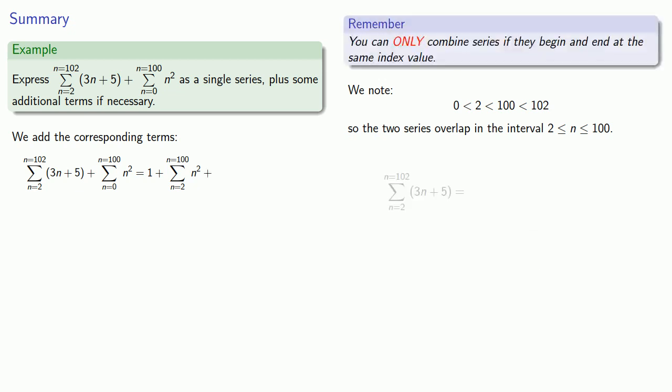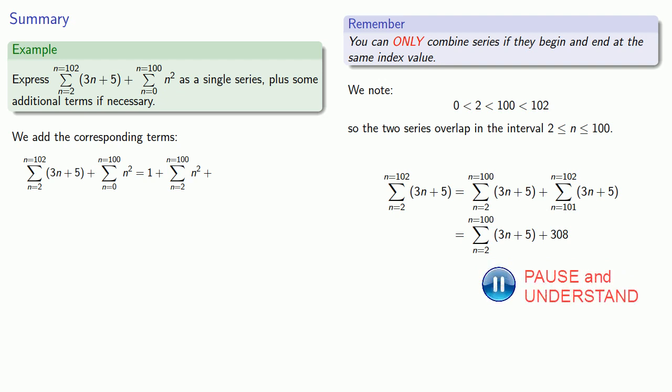We can replace this series from 0 to 100 of n squared with 1 plus the sum from 2 to 100 of n squared. Now let's take a look at the second series. We'll split off the part that runs from 2 to 100, and then we'll have some leftover terms. We can keep the first part as that's part of the overlap, and the second part we will evaluate. If n equals 101, the term is 308. And if n equals 102, the term is 311. So we can add these two terms together, and we have an expression for the other series.